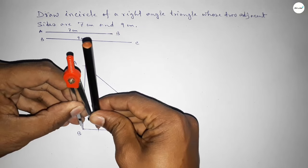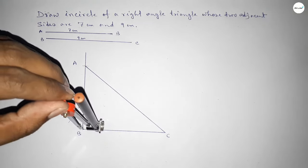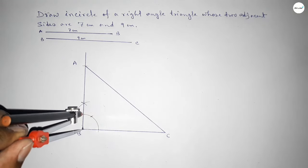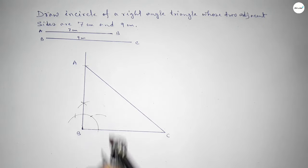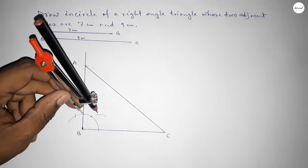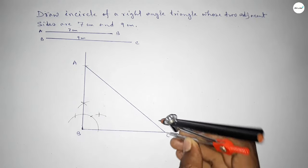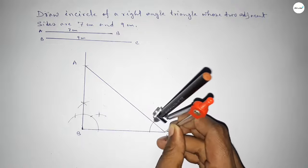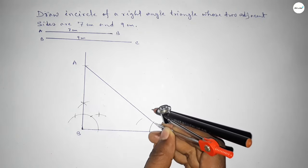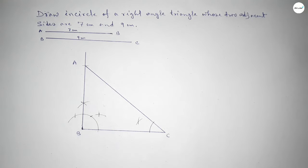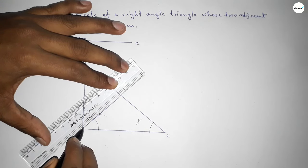Now we have to bisect angle B. Taking any radius, drawing arcs with the same length, placing the compass and cutting arcs. Joining to get the bisector of angle B.